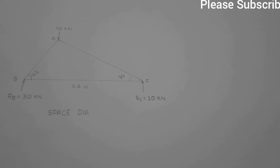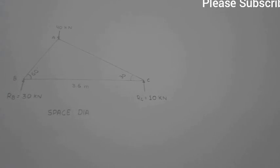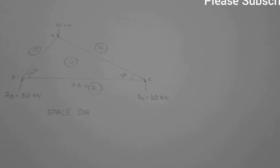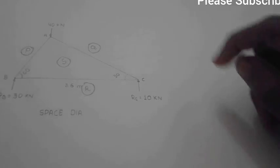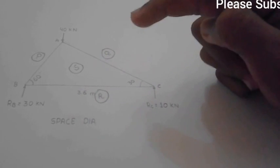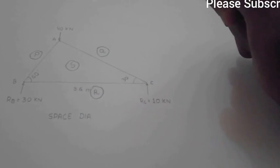Use Bow notation PQRS in the clockwise direction in the truss. As you can see, I have given the Bow notation PQRS in the clockwise direction. That's important. This is the space diagram of the truss.